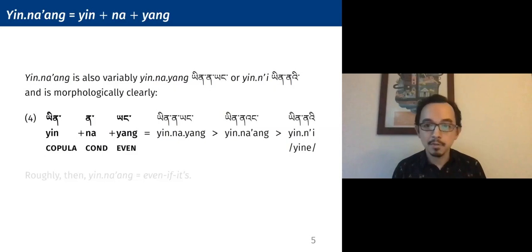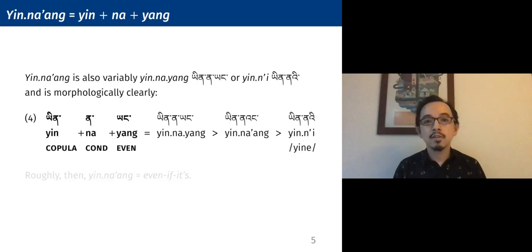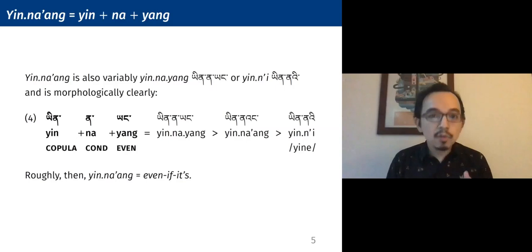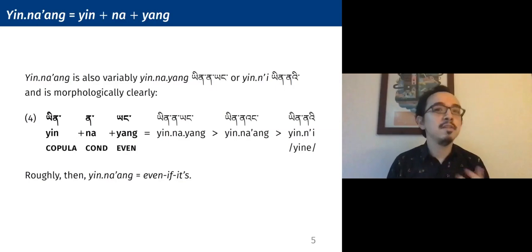There's also a contracted form, and I should note that follows a more general pattern of yang — scalar additive — being reduced in certain environments. So if we take this morphology seriously, that means that yinang is something like 'even if it's,' right?